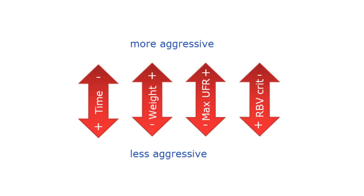The display parameters influence the BBMC. Changing them during treatment will allow the CERDLX UF control to be more or less aggressive with the ultra-filtration. Extending the time, reducing the UF goal, increasing the RBV grid, and reducing the max UF rate will make the machine less aggressive with the fluid removal.